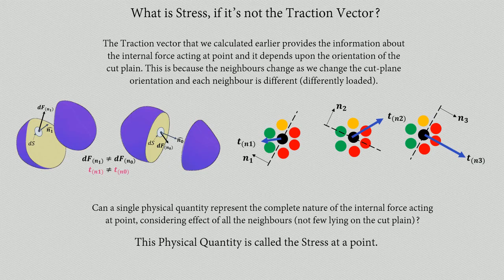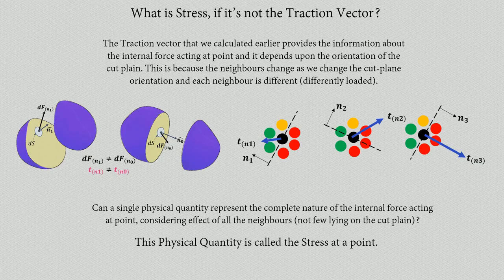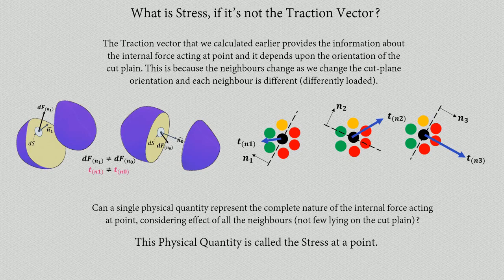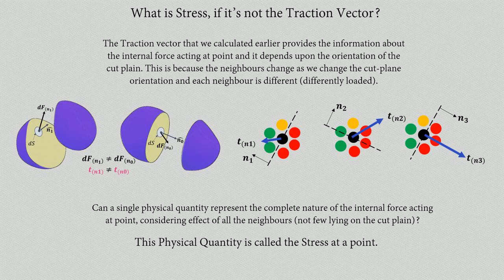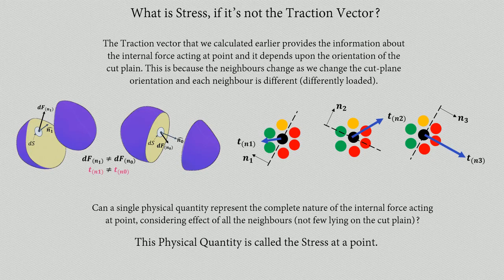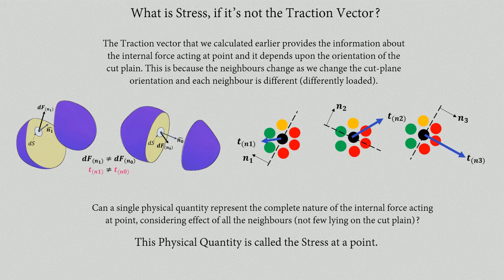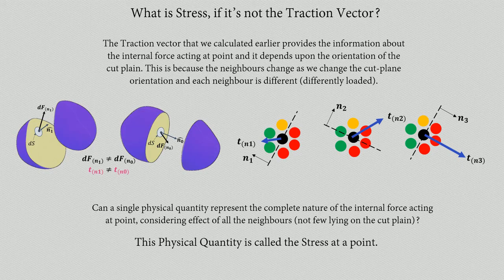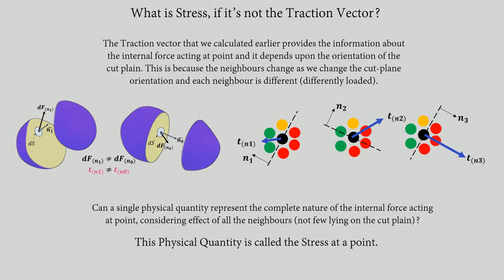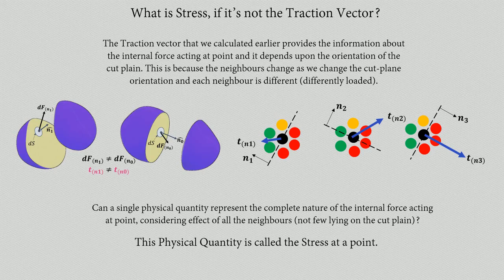This property is called stress at that point. Note that the difference between traction and stress at a point is: traction talks about the force per unit area or the impact of neighboring particles in a specific direction, but stress is much bigger and contains much more information than traction. If you take infinite tractions, for example, that will give you stress. It contains all the information around a particle.